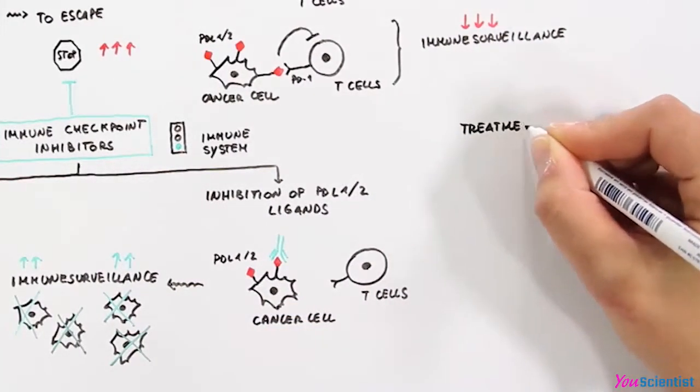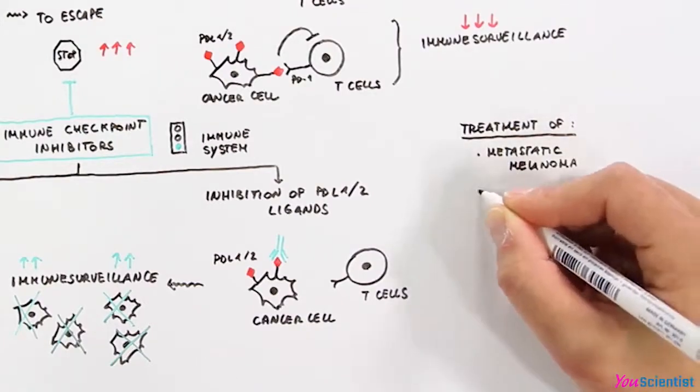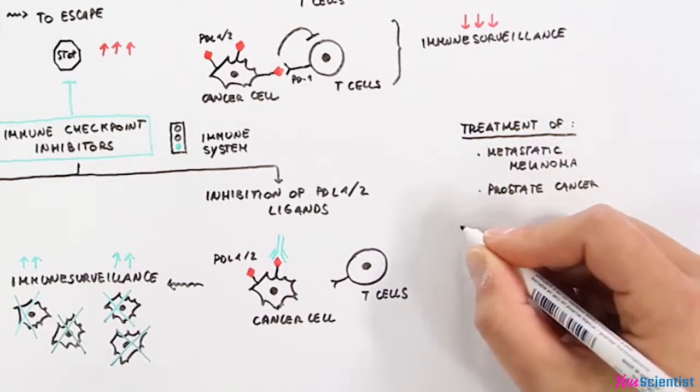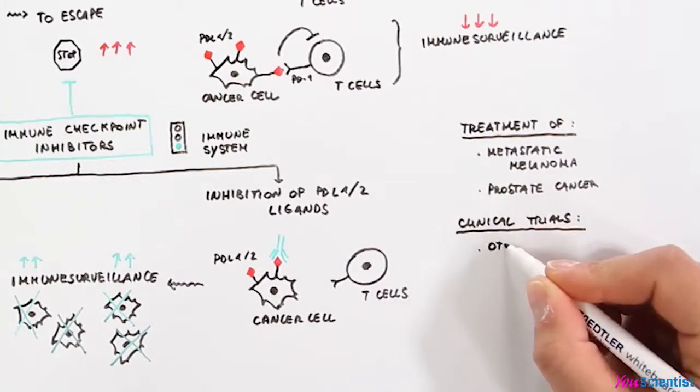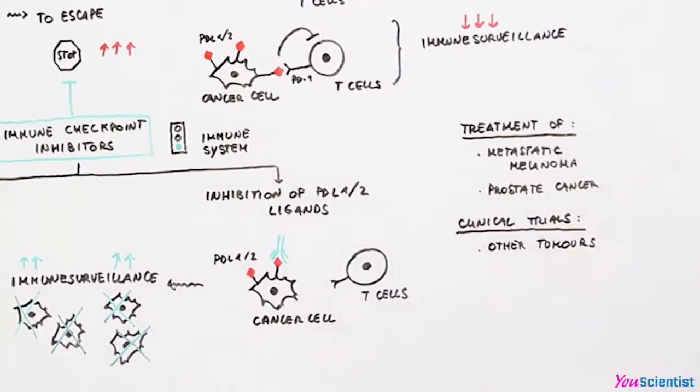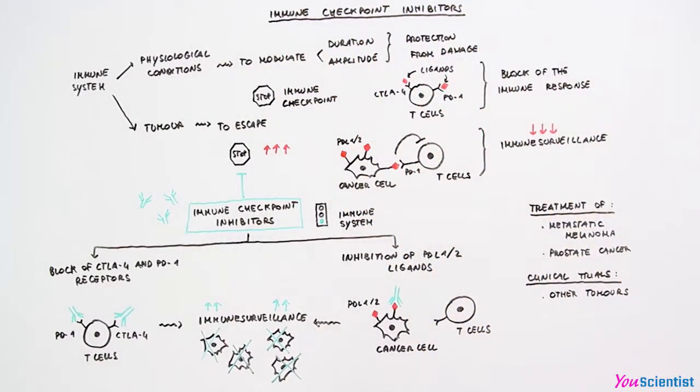Immune checkpoint inhibitors are already used in the treatment of metastatic melanoma and prostate cancer. Ongoing clinical trials are investigating their potential use in other types of tumors. The immune checkpoint inhibitors re-educate our immune system to fight against cancer and represent an important frontier of immunosurveillance.